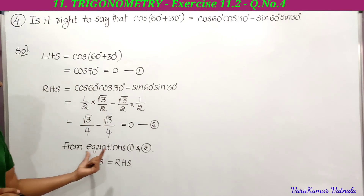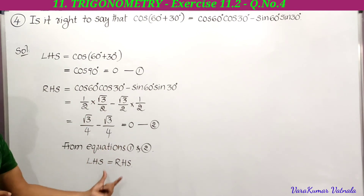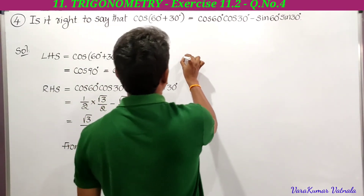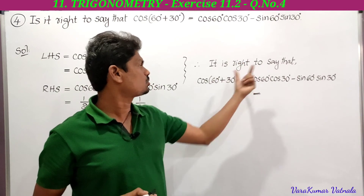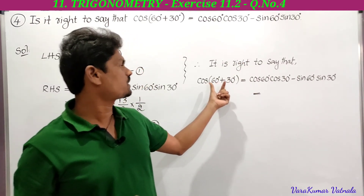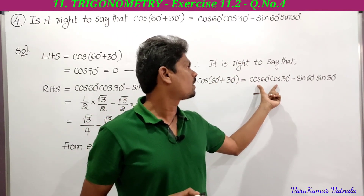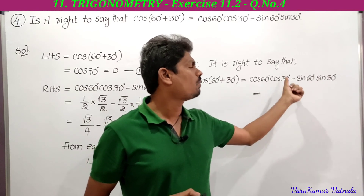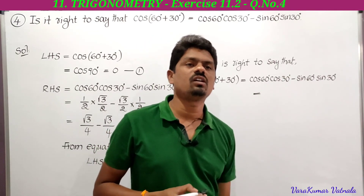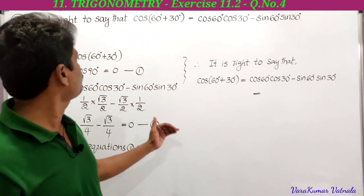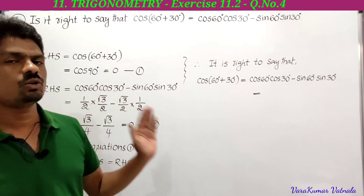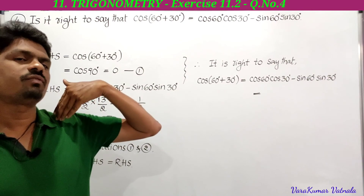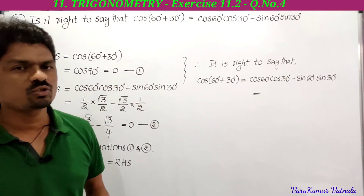From equations 1 and 2, LHS is equal to RHS. Therefore, we can conclude that it is right to say that cos of (60 + 30) is equal to cos 60 cos 30 minus sin 60 sin 30. This is the fourth problem in Exercise 11.2. That's all for today's class. We'll learn the fifth problem in the next class. Thanks for watching!